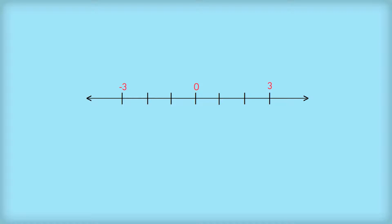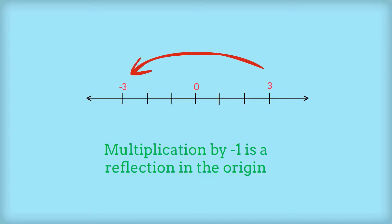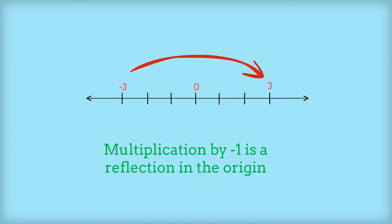Imagine our whole world is the real number line, which contains counting numbers, integers, fractions, and irrational numbers. If you take the number 3 and multiply by negative 1, you get negative 3. If you multiply negative 3 by negative 1, you get back to 3. So multiplication by negative 1 is essentially a reflection in the origin of any number on the real number line.